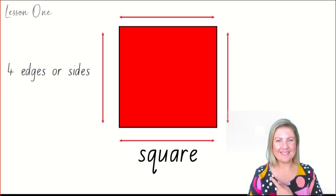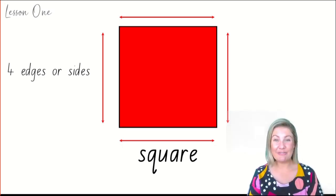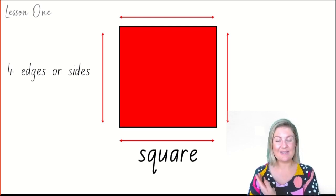Can you see the red lines showing us where the sides are on this square? There are four edges or sides on a square. What about corners, those points? They're like a spot where two edges meet. Do you see any corners on this square?